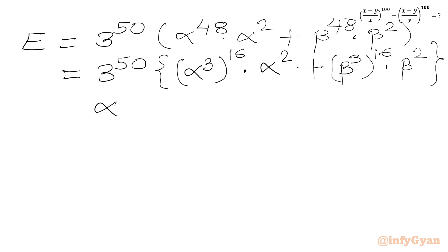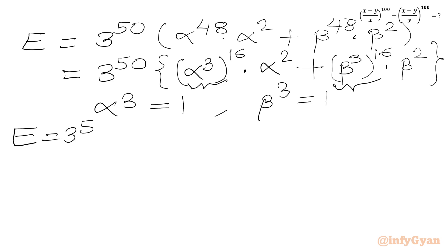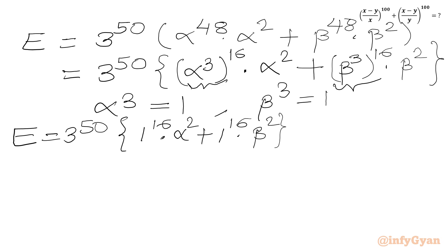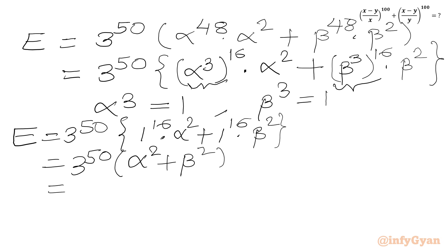Now we have our two very very important equations: alpha cubed equals 1 and beta cubed equals 1, which we are applying here. So expression E equals 3 to the power 50, in bracket, 1 to the power 16 times alpha squared plus 1 to the power 16 times beta squared. Since 1 to the power 16 is 1, we can write 3 to the power 50 times, in bracket, alpha squared plus beta squared. We expand this as alpha plus beta whole squared minus 2 times alpha times beta.